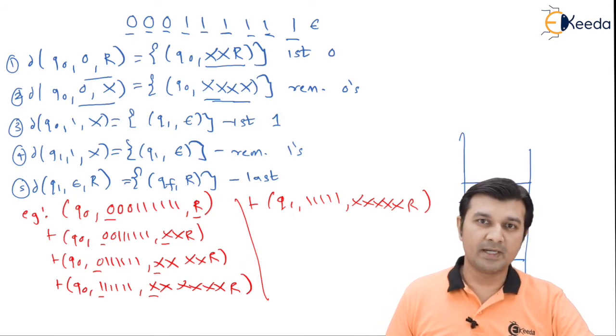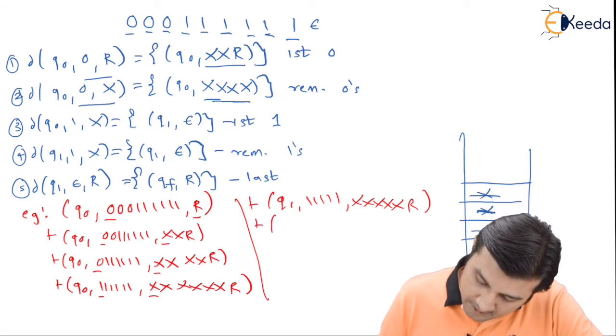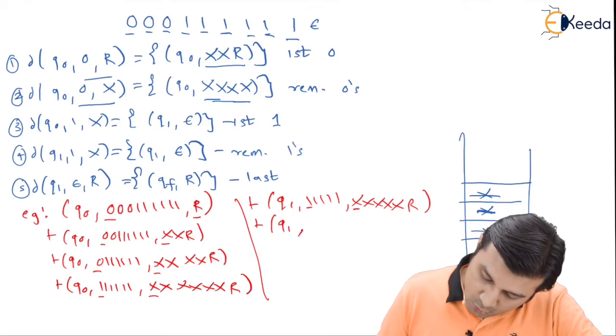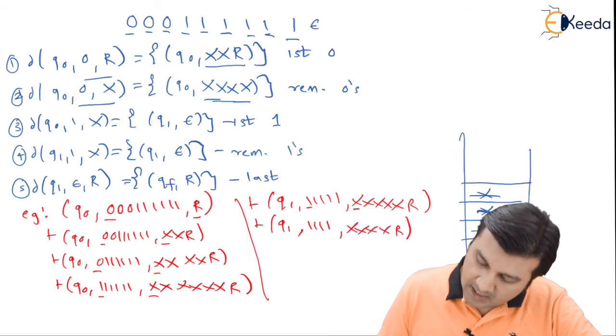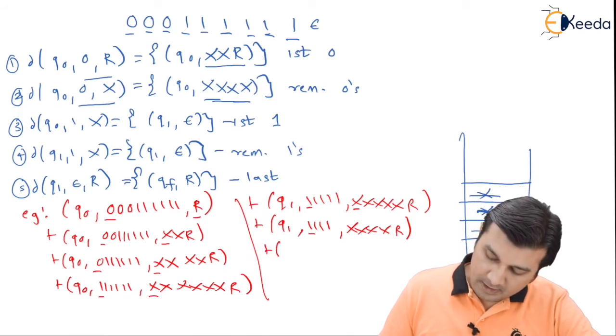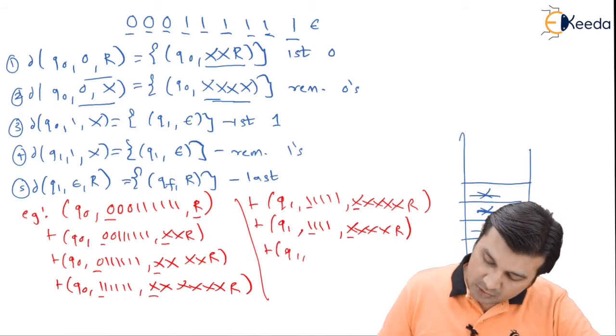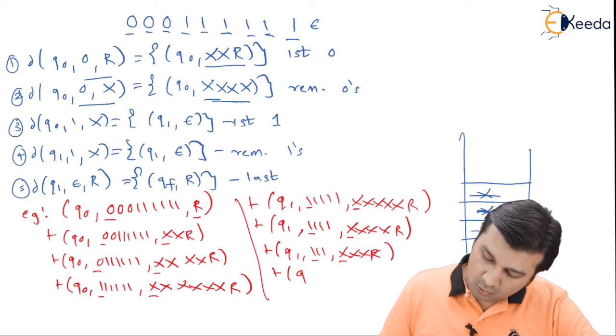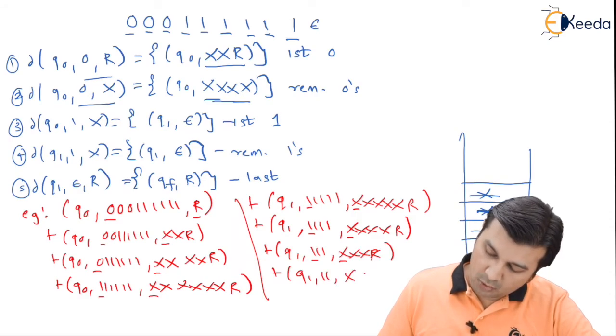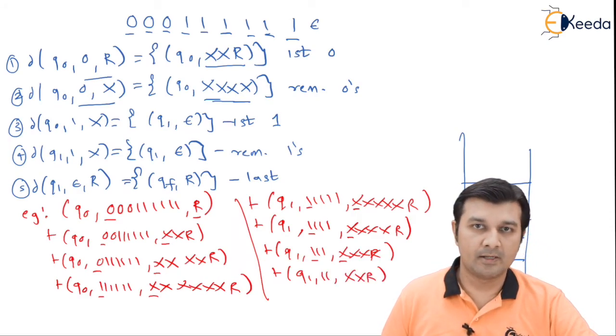By now, I am very sure you might have concluded the problem. Just for the sake of completing it, let me do it. I say q1 on 1 when the stack top is x, remain in state q1 using my rule number 4. Then q1 on 1 when the stack top is x, using rule 4, 3 ones followed by 3x and a R. Then I have q1 on 1 when the stack top is x, using rule 1, q1, 2 ones followed by xxR.